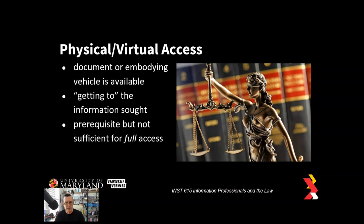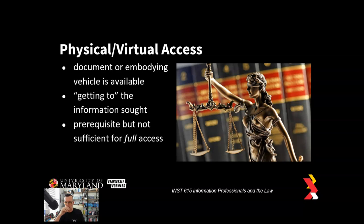The final part of the triad is the A, which stands for availability — the principle that information is there when it is needed, that you can access and use it on demand, and that it's not being taken offline or attacked in some way that prevents you from getting to it. Physical access, then, is a core requirement — whether physical or virtual — before we can get to the other levels of access. It's not enough just to have the physical access or get a law book from a library; you need meaningful access to the information.